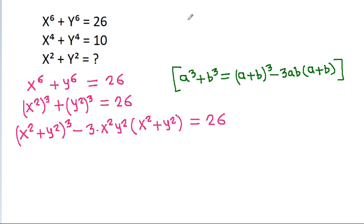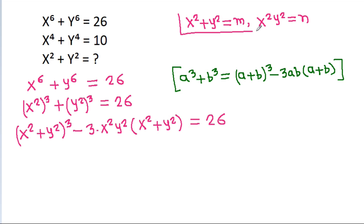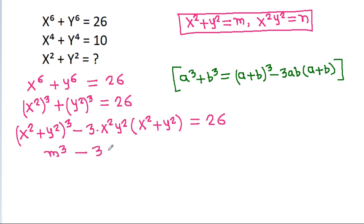If we take x² + y² = m and x²y² = n, then it is m³ - 3nm = 26.